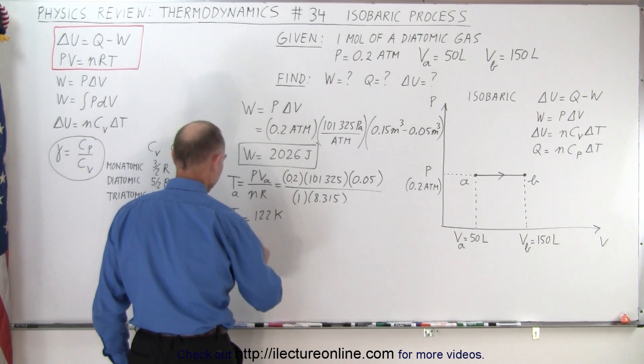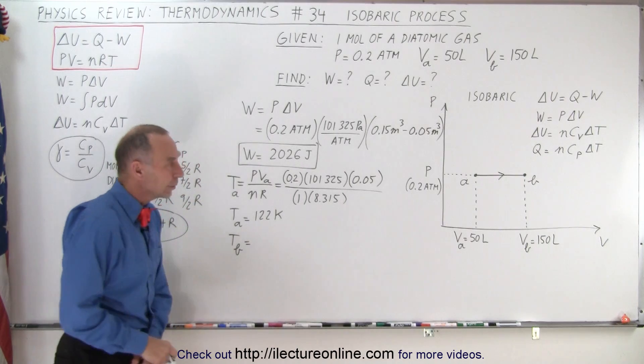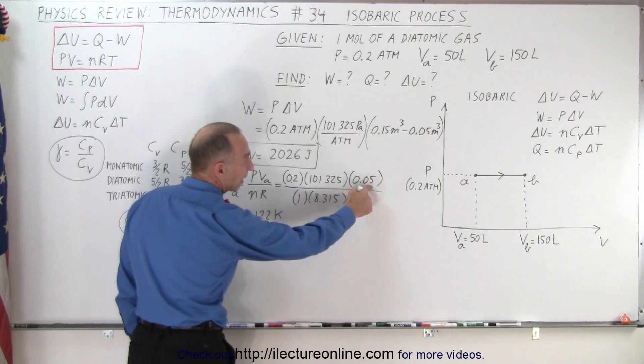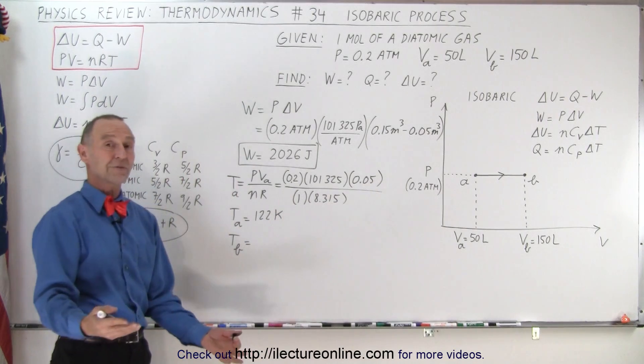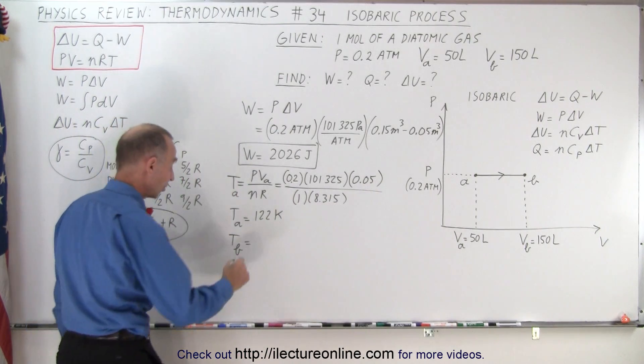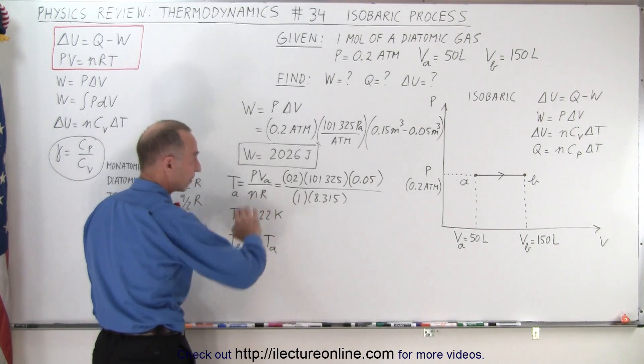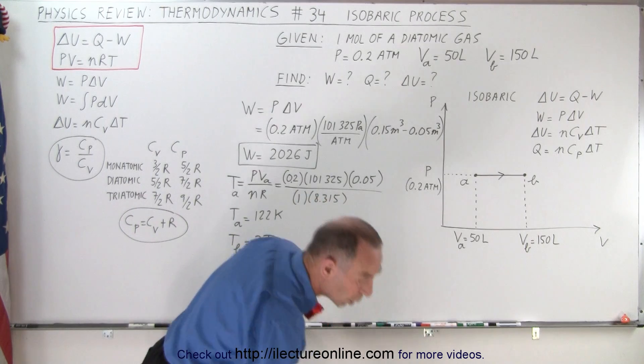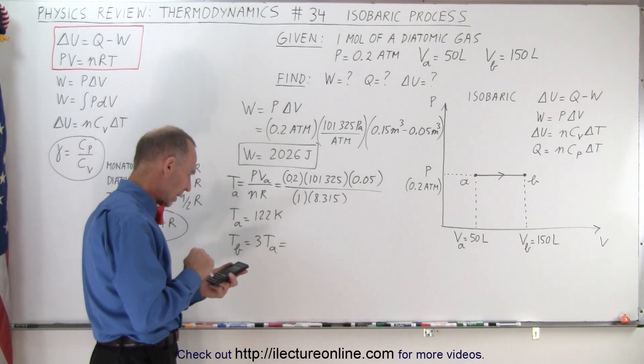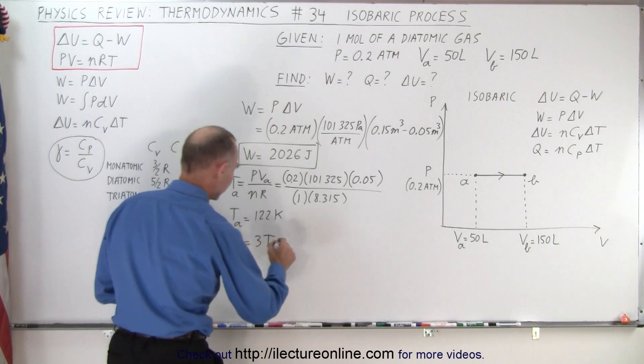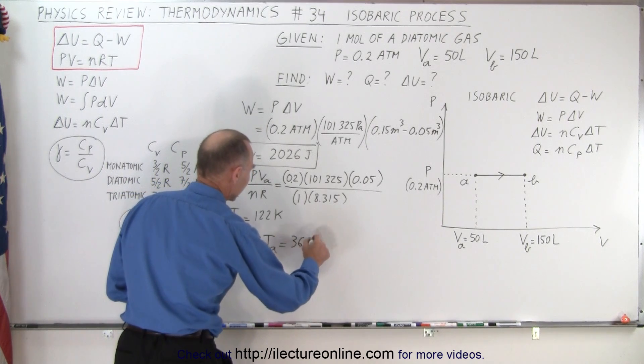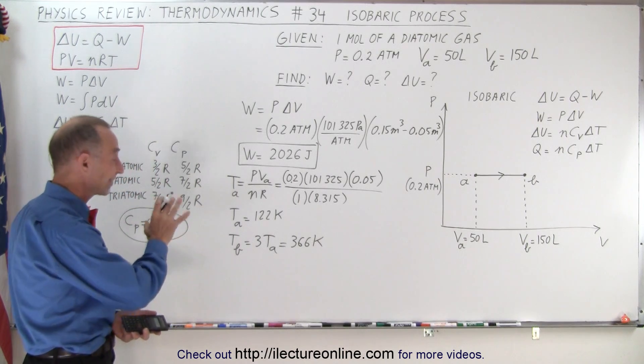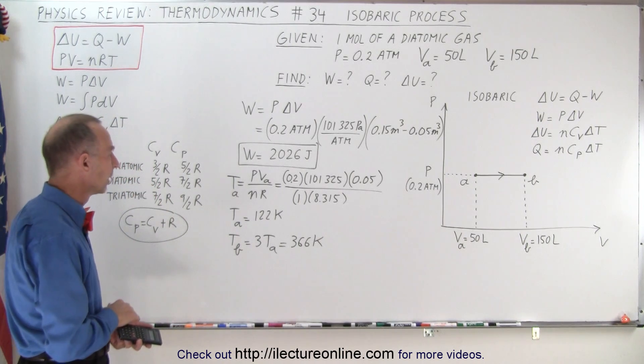So what is the temperature at B? Well, notice that since we have three times the volume, the only thing that changes is that this goes from 0.05 to 0.15. Three times the volume means three times the temperature. So it would be three times the temperature at A because everything else stays the same. And so that would be that number times three. And that would be 366 Kelvin. The reason why I used my calculator is because I want to make sure I didn't have a roundoff error because it's not exactly 122 Kelvin.